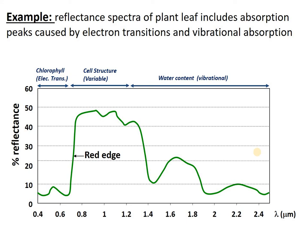Let's step back and look at how electron transitions and vibrational absorption combine to govern the reflectance spectra of a material. Here's the reflectance spectra of a healthy leaf. Down in the visible, we have two absorption troughs that are both driven by electron transitions within the chlorophyll molecule. Out further in the infrared, we have some absorption troughs driven by the water molecule — some of these are the ones we just saw in the previous slide. So at the longer wavelengths it's vibration of the water molecule absorbing photons; at the shorter wavelengths it's electron transitions in the chlorophyll.